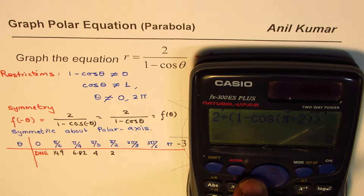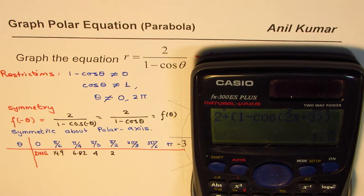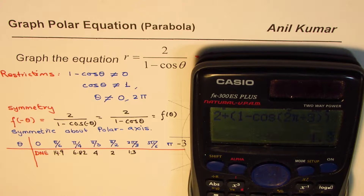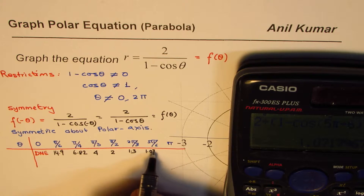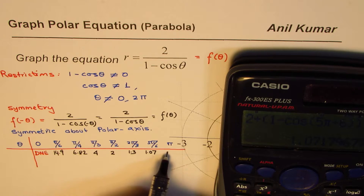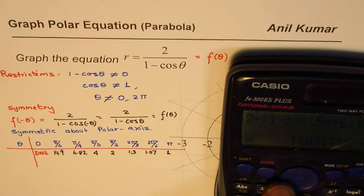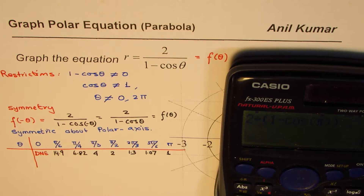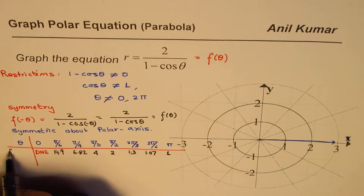For 2π/3: the result is 4/3, which is approximately 1.3. For 5π/6: the result is approximately 1.07. And for π: cos π equals minus 1, so 1 minus (minus 1) equals 2 in the denominator, giving us 1. So at π the value is 1. These are our function values to plot.